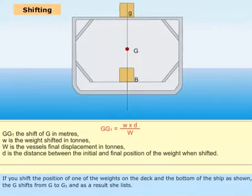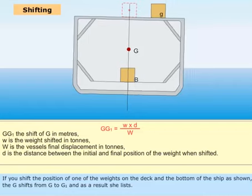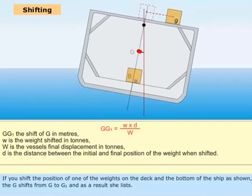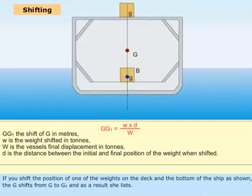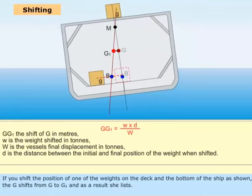If you shift the position of one of the weights on the deck and the bottom of the ship as shown, the G shifts from G to G1 and as a result, she lists.